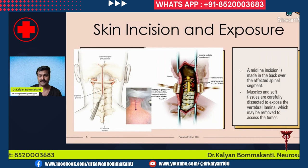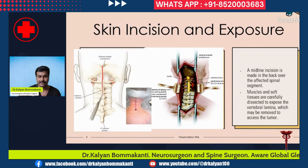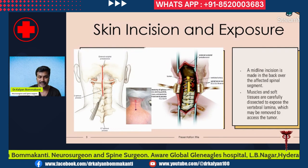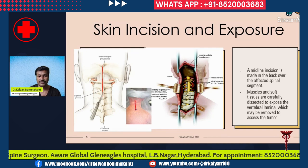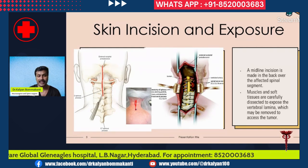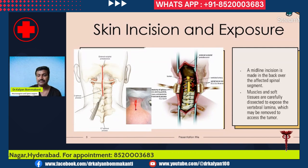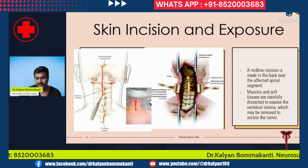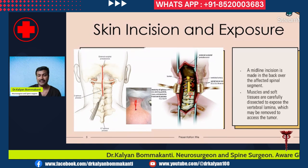The skin incision typically used is the midline incision made in the back over the affected spinal segment. This patient has a cervical spinal cord tumor, so the incision is in the midline over the back of the neck. The muscles are then dissected. You can see the intact vertebral laminae in this segment; we have removed the bone and lamina, so the spinal cord with the tumor comes into picture.